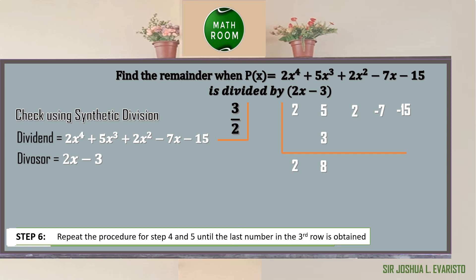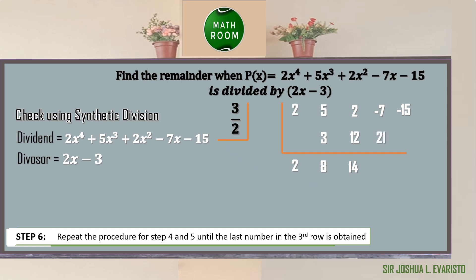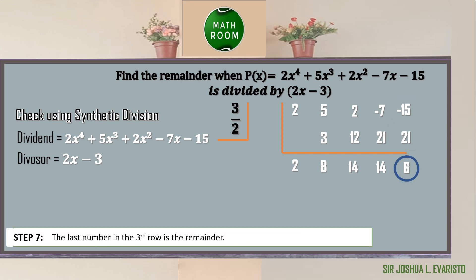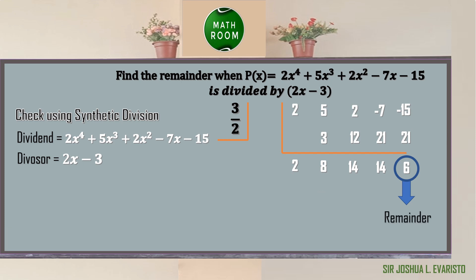Repeat the procedure: 3 halves times 8 is 12; 2 plus 12 is 14. Then 3 halves times 14 is 21; negative 7 plus 21 is 14. Then 3 halves times 14 is 21; and for the last step, negative 15 plus 21 is 6. Therefore, we can conclude using both the remainder theorem and synthetic division that our remainder is 6.